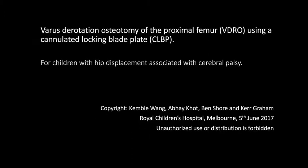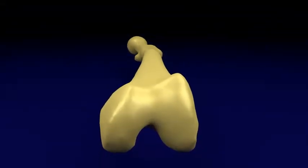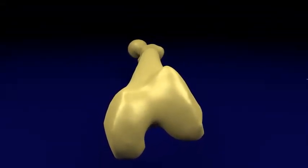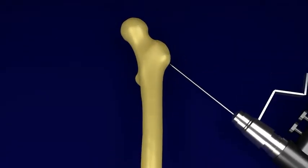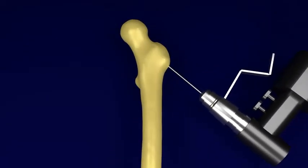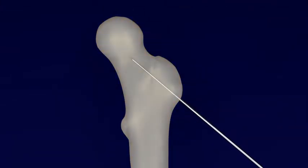Following a standard lateral approach to the proximal femur, a guide wire is inserted from the lateral cortex of the proximal femur to reach the central position of the proximal femoral metaphysis, just shy of the physis. The procedure is easier to perform with the hip internally rotated and abducted, so the guide wire is inserted parallel to the operating table and floor.